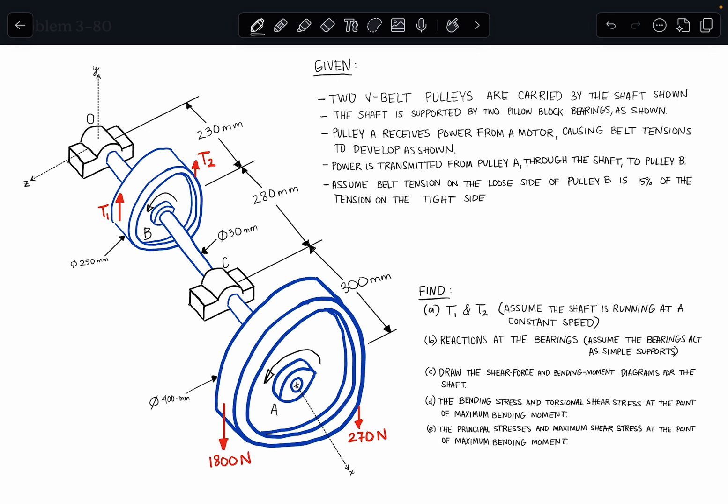Now let's talk about what we've been asked to find here. So first is T1 and T2, those are the tensions in the belt on pulley B, and we need to find them assuming that the shaft is running at a constant speed.